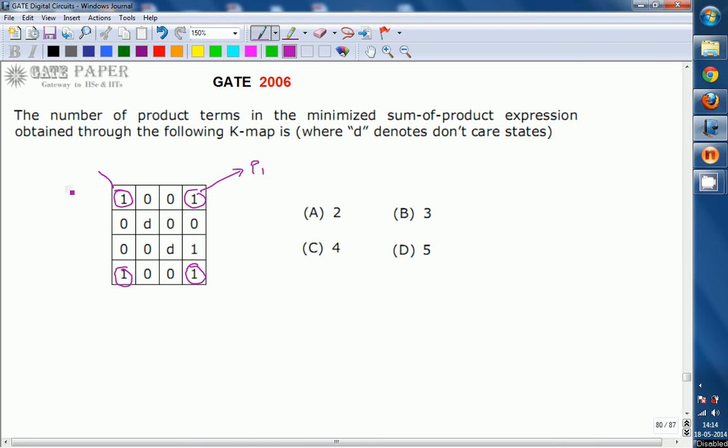And the resultant expression if you want to know, at that time assume that these are going to be A, B, C, D. And if you are going with these are 00, 01, 11, 10. And again here it is 00, 01, 11, 10.